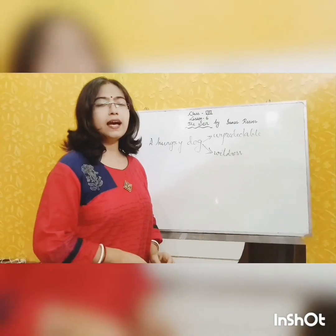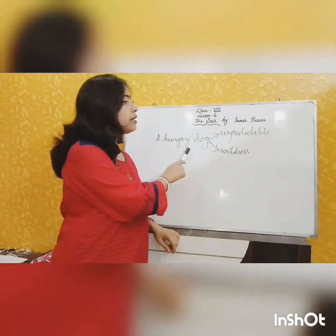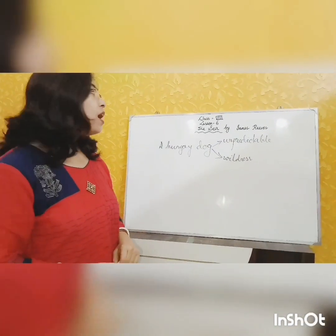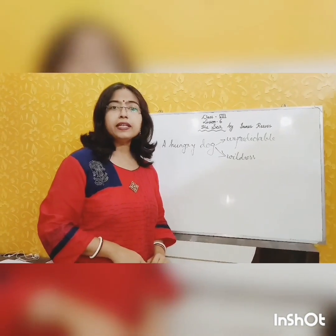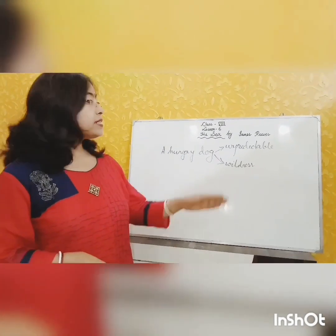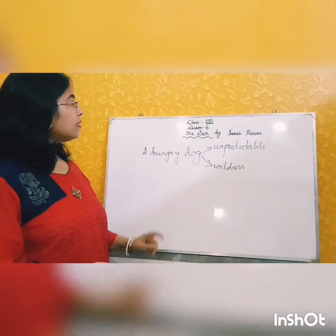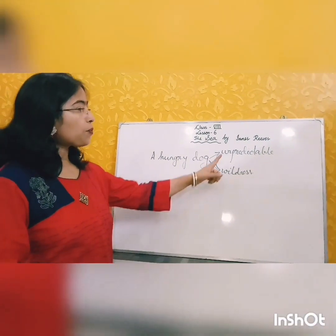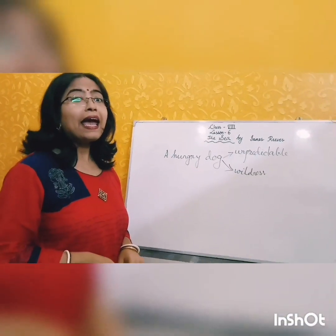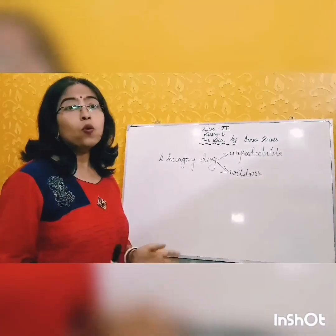The poem starts with the line, 'The sea is a hungry dog, giant and great.' Here, the word 'a hungry dog' — it is both unpredictable and wild. When a dog is hungry, it does not know how to fulfill its hunger, and at the same time it becomes wild because it is uncontrollable out of hunger. Like the hungry dog, the sea is also unpredictable and wild. The sea is powerful. Tidal waves of the sea are too powerful, and this power cannot be predicted.